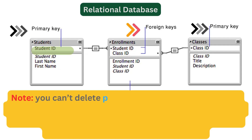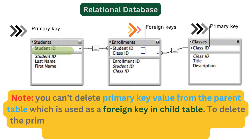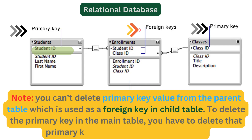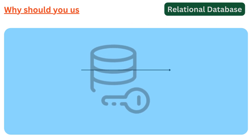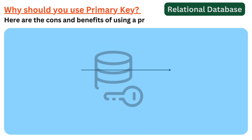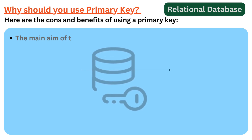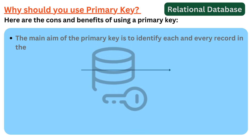Note: you can't delete a primary key value from the parent table if it is used as a foreign key in a child table. To delete the primary key in the main table, you have to first delete that primary key value from the child tables. The main aim of the primary key is to identify each and every record in the database table.